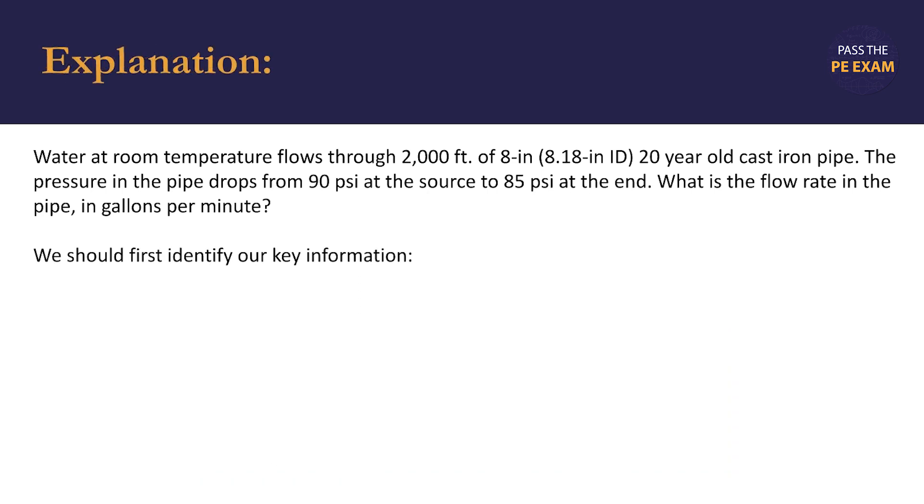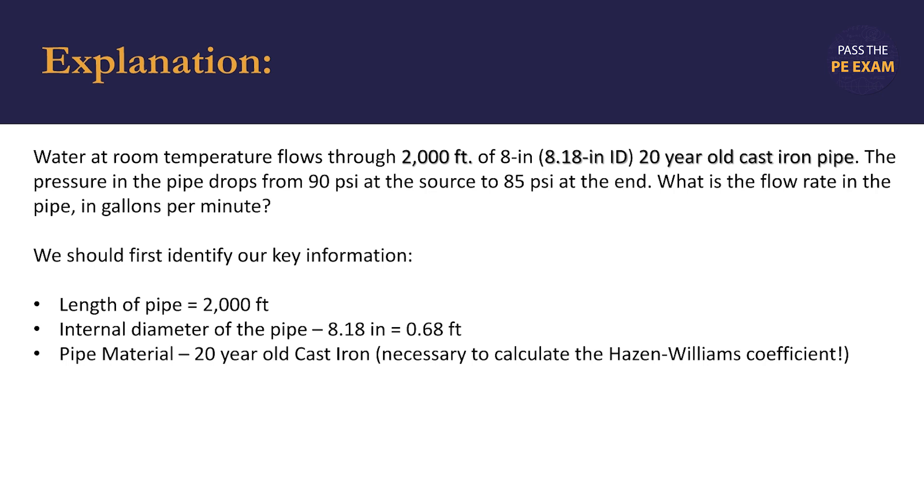There's a lot of information here and we should identify the key pieces. The length of the pipe, and that is the distance that the water flows, is 2,000 feet. The internal diameter is 8.18 inches, so we should use this as this is the actual diameter, the physical diameter, not the nominal diameter. The pipe material is 20 year old cast iron, and this seems like a very arbitrary fact, but knowing the type of pipe will be necessary to calculate the Hazen Williams coefficient if we are able to use the Hazen Williams equation or one of its derivatives.